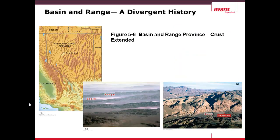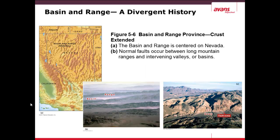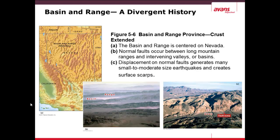Divergent history can be read in the geology. An example is the Basin and Range Province in Nevada, United States. The basin and ridge system is centered in Nevada, and as shown in figure A, you can see its location. In photo B, normal faults occur between long mountain ranges and intervening valleys. These valleys or basins are caused by displacement, labeled in photo C. This displacement of the ridges causes the valleys to occur, and the line where this occurs is called a fault scarp.